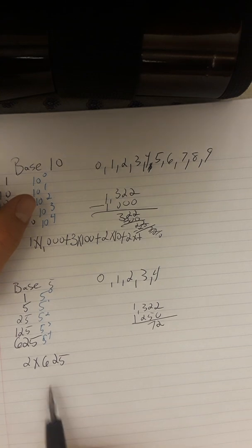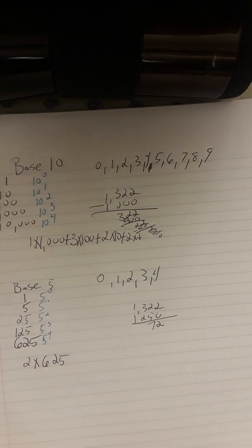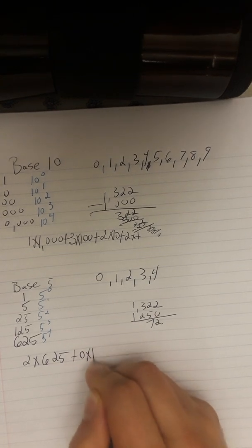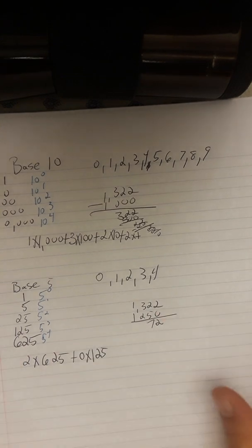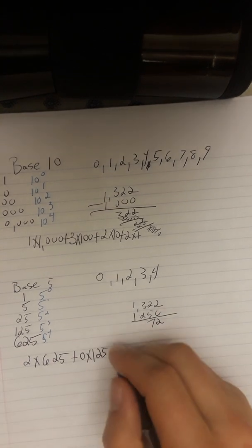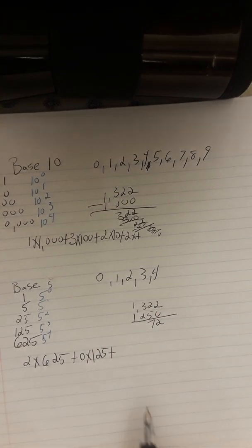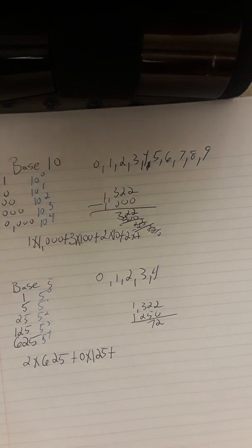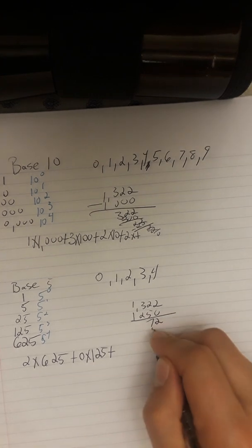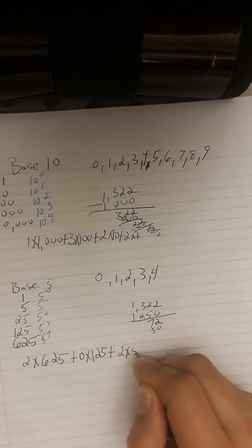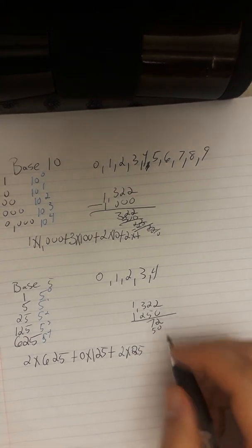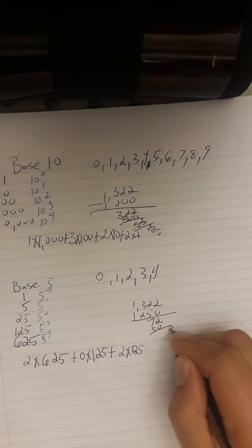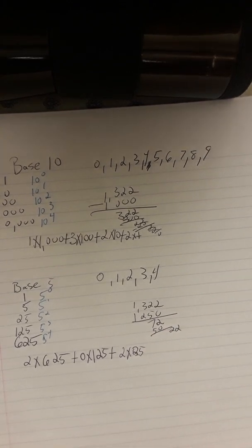So we've got 1,250 because that is 2 times 625, and we're going to end up with 72. How many times does 125 go into 72? Zero. Are we going to write nothing? No. We're going to write zero times 125, and that comes down to placement values. It's going to throw everything off if we lose that placement. Next, how many 25s go into 72? There's going to be 2 of them. So 2 times 25 is going to be 50. We're going to be left with 22.